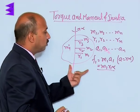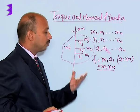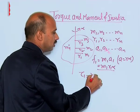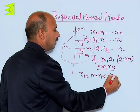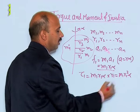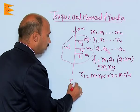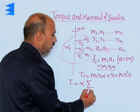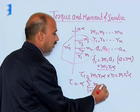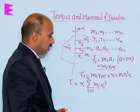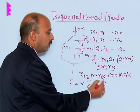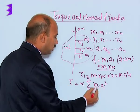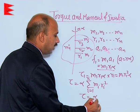Similarly, we can find the torque on particle 1. Torque equals m1·r1·alpha multiplied by r1, that is m1·r1²·alpha. The total torque can be written as torque equals alpha times the summation from i equals 1 to n of mi·ri².